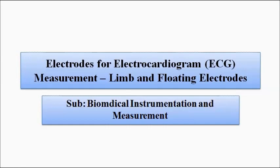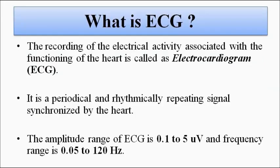Electrocardiogram is the recording and measurement of the electrical activity associated with the functioning of the heart. It is a periodical and rhythmically repeating signal which is synchronized with the heartbeat. The amplitude range of ECG is from 0.1 to 5 millivolts and the frequency range is from 0.05 to 120 Hz.